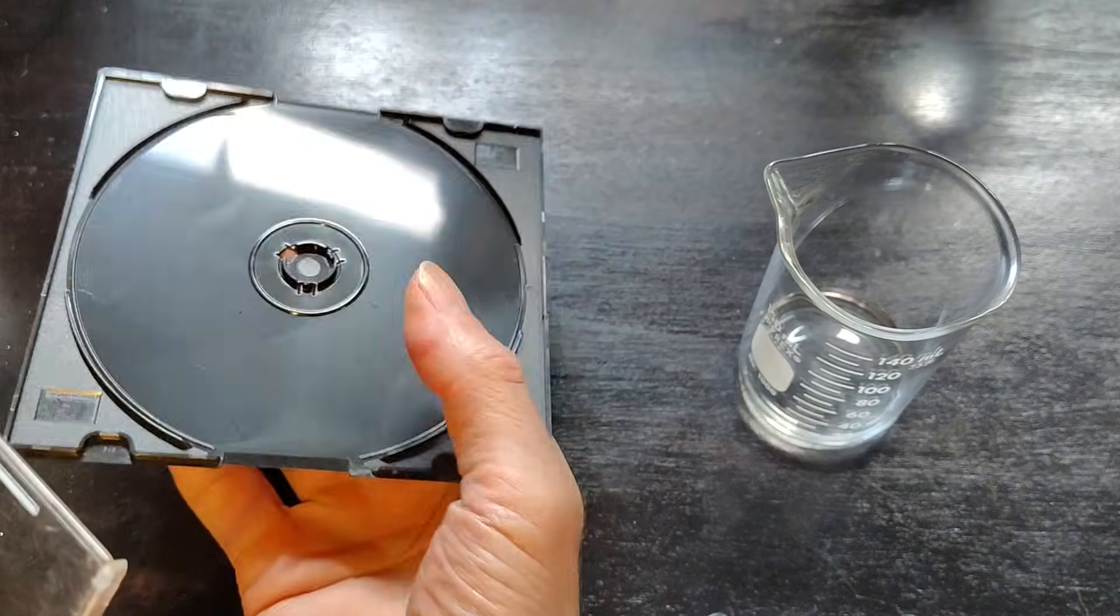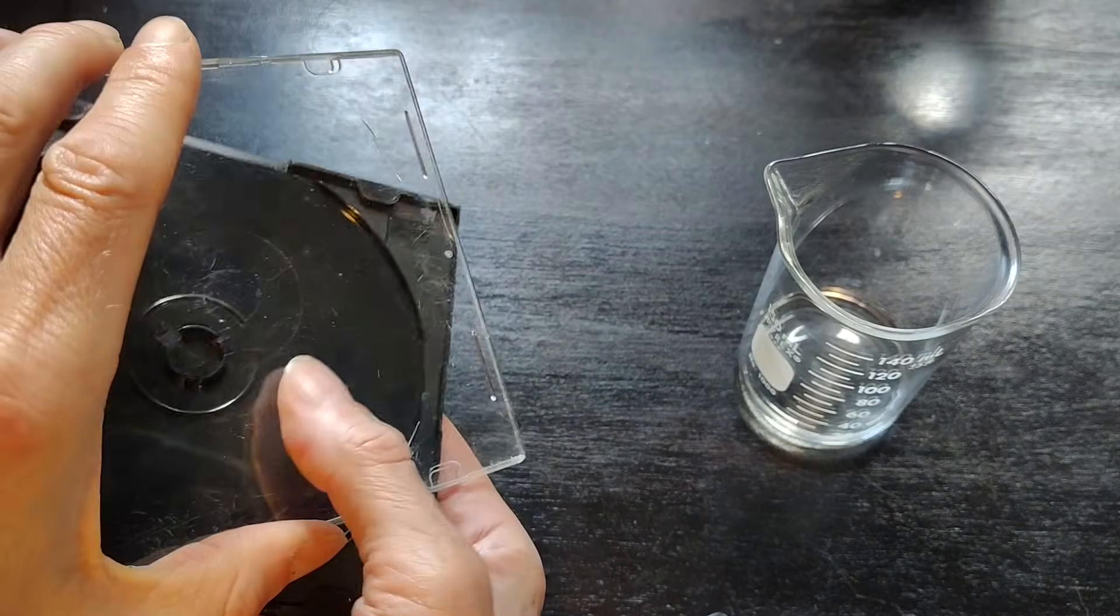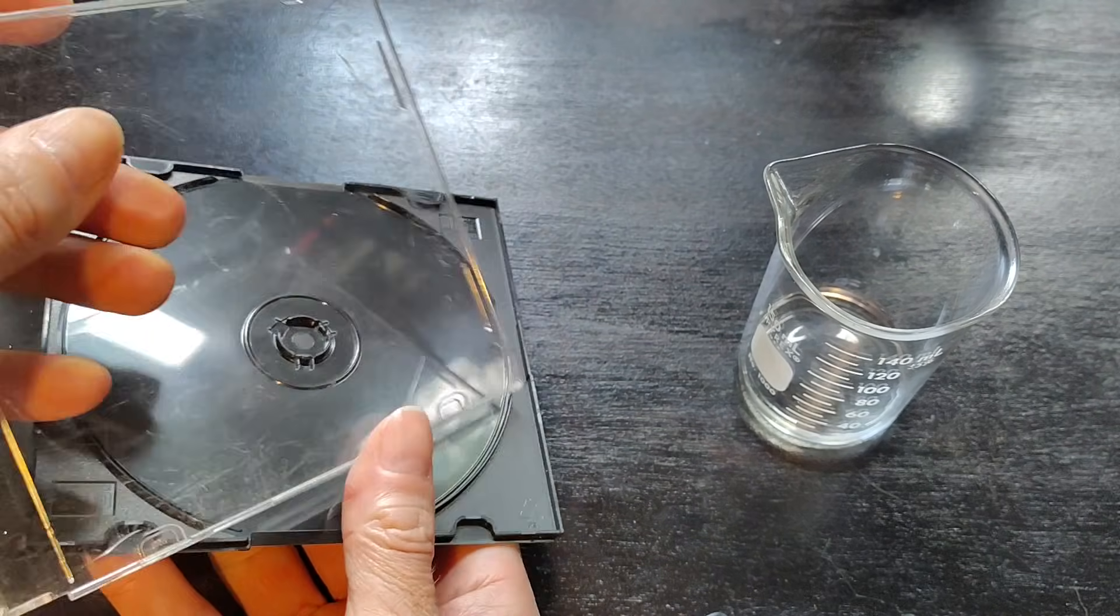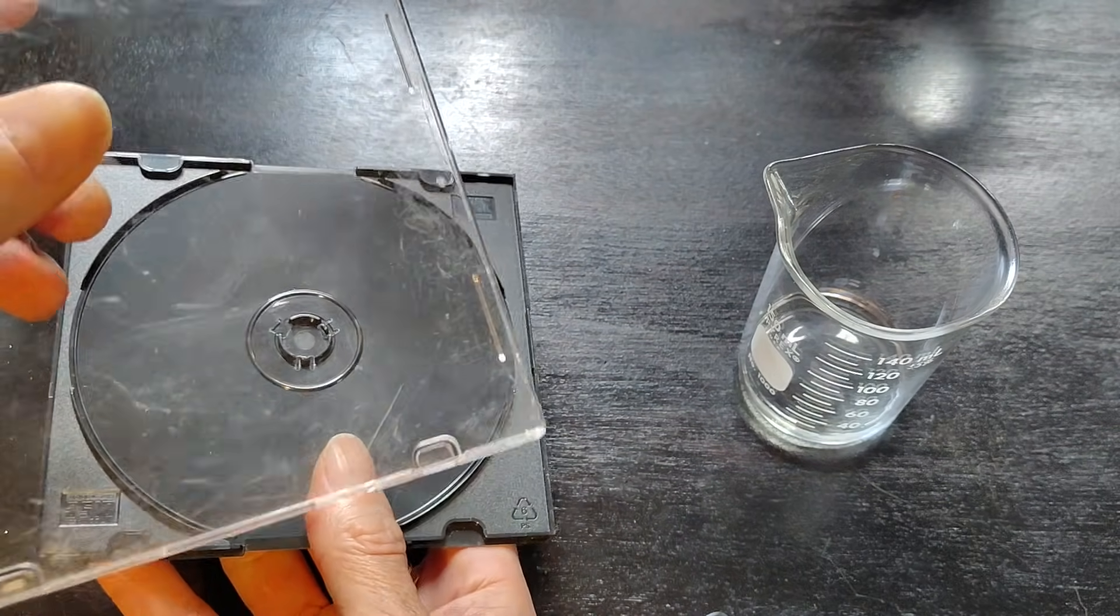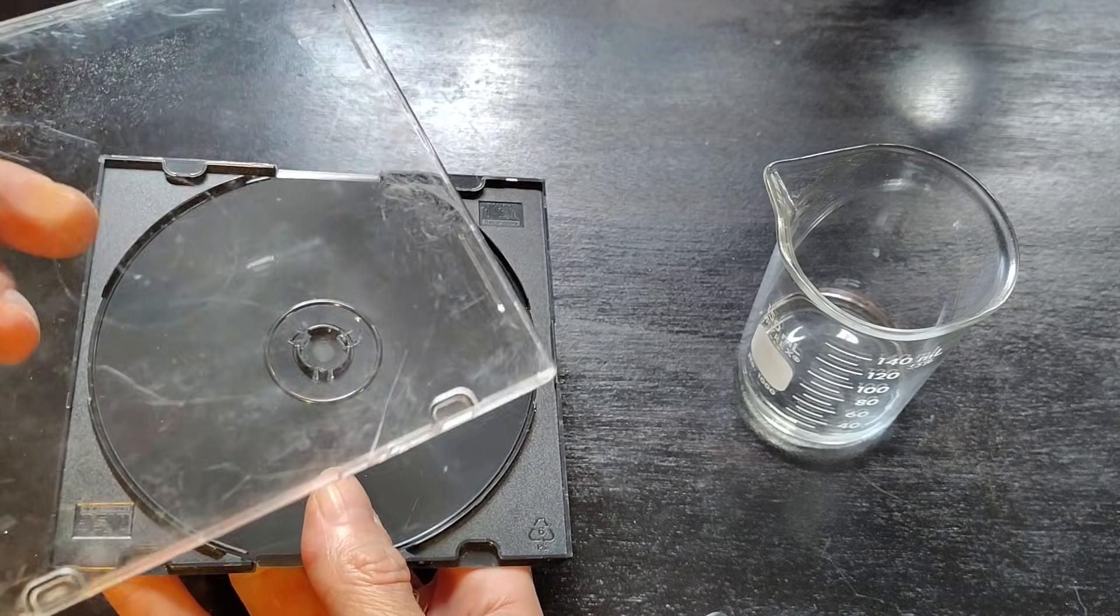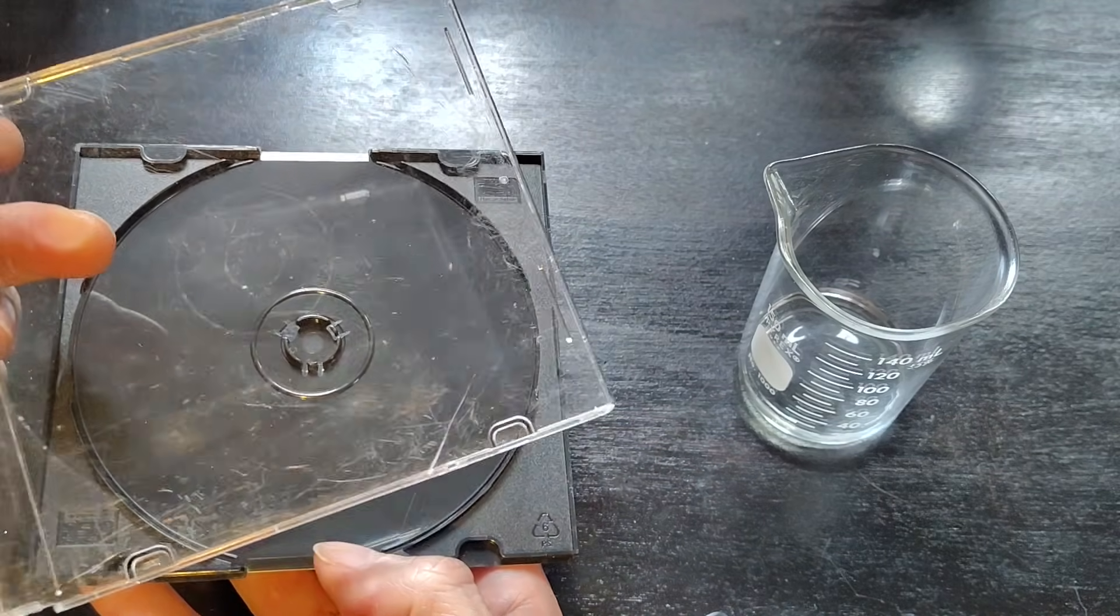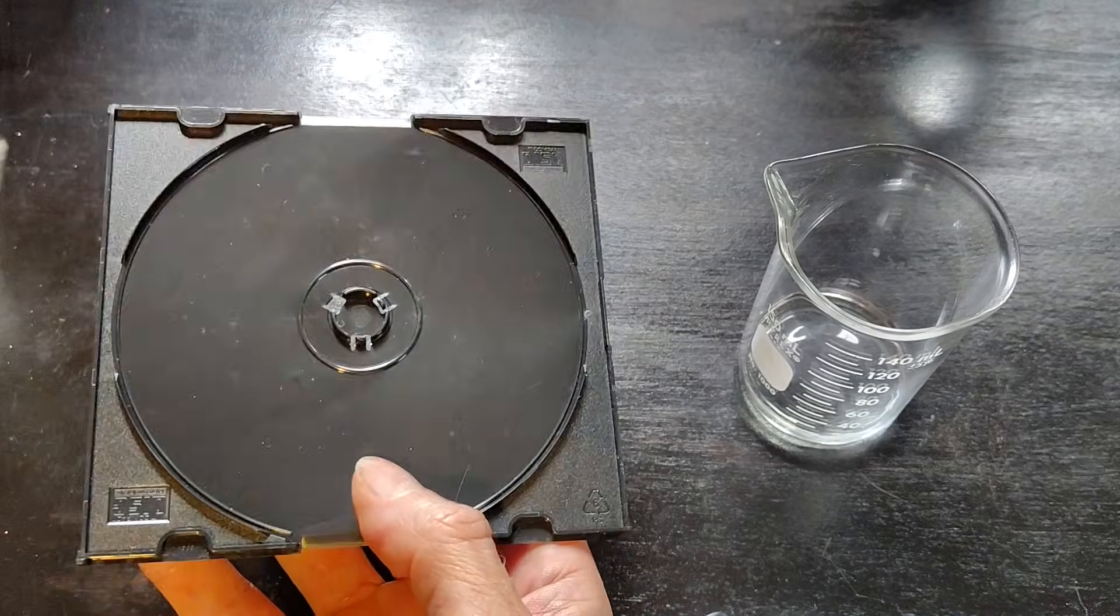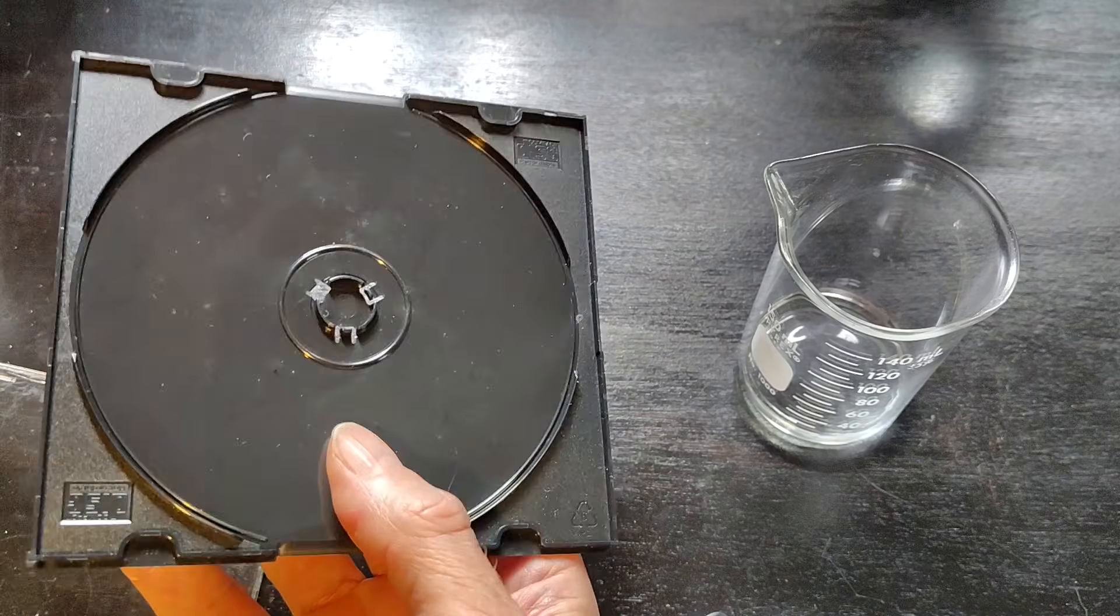Now both the black part and the transparent part of the CD case will work, but the transparent one is more fragile and will become even more brittle as you transform it into a proton exchange membrane. So I strongly recommend working only with the black part.